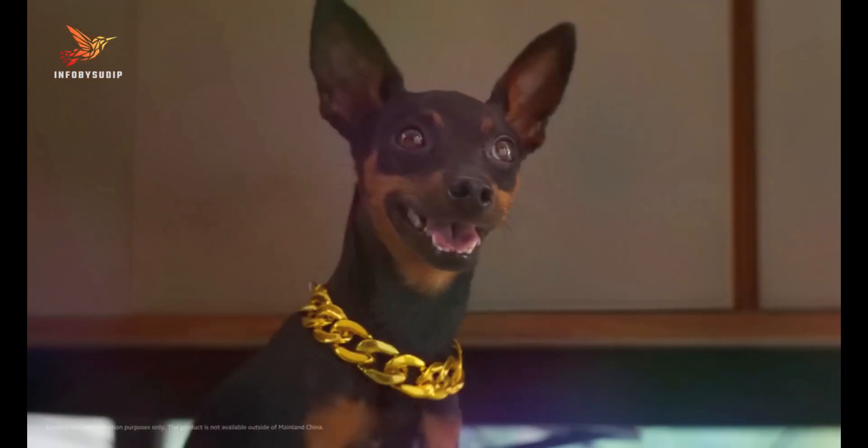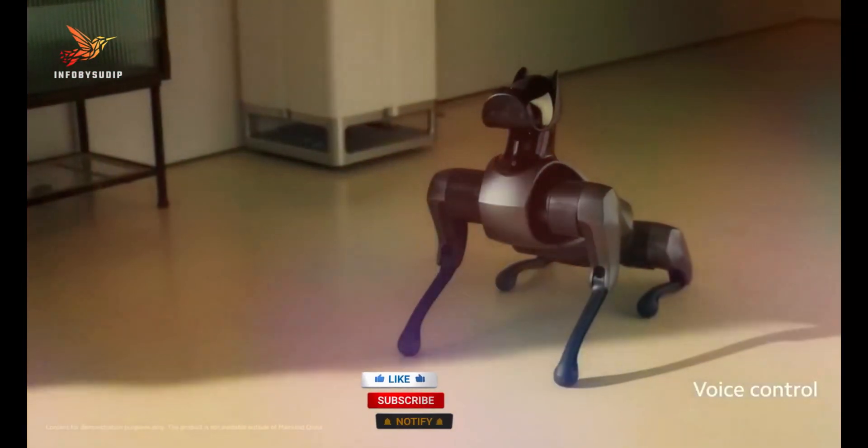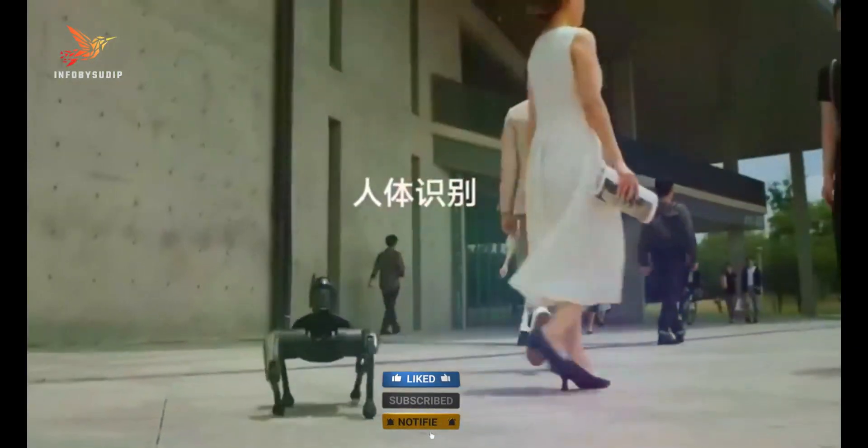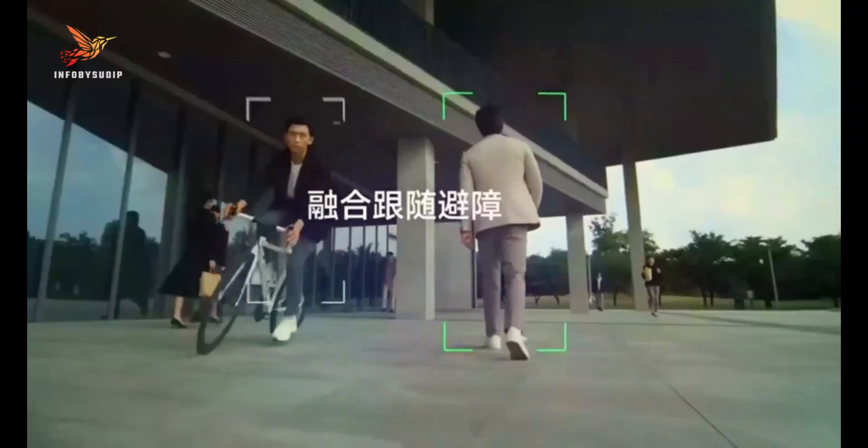The CyberDog 2 is also equipped with a wide range of sensors, including cameras, LiDAR, ultrasonic sensors, and force sensors. This allows the CyberDog 2 to perceive its environment in 3D and avoid obstacles.